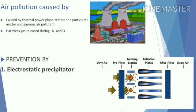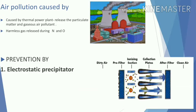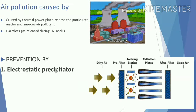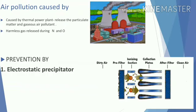Air pollution is mainly caused by thermal power plants. It can be controlled or prevented by two methods: one is called the electrostatic precipitator, and the second one is called the scrubber. We will discuss these two methods, as they are mentioned in the syllabus.